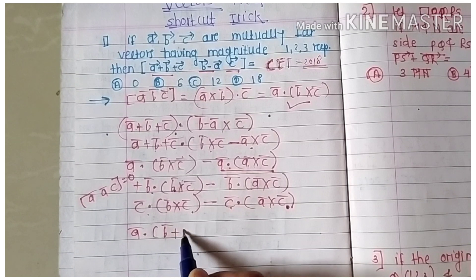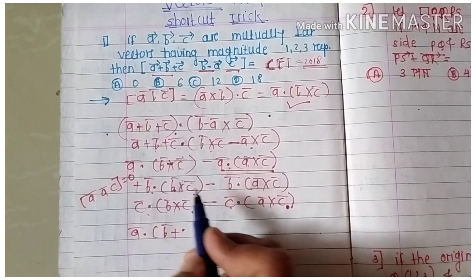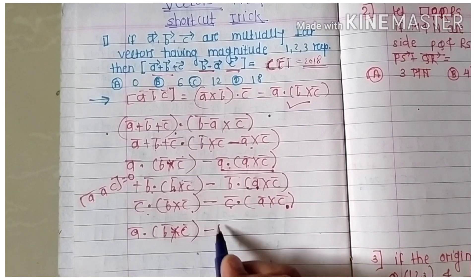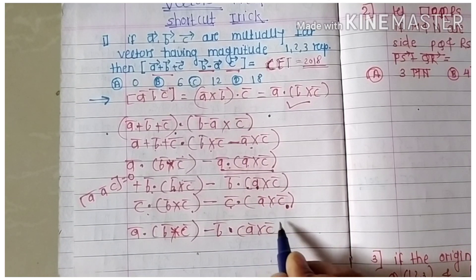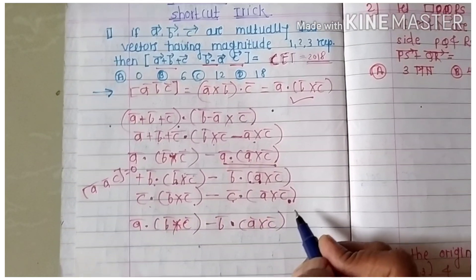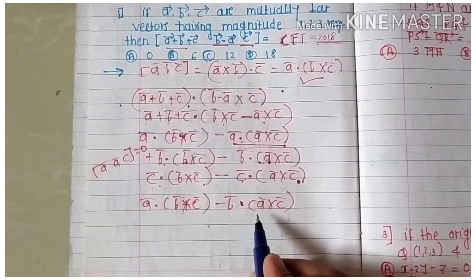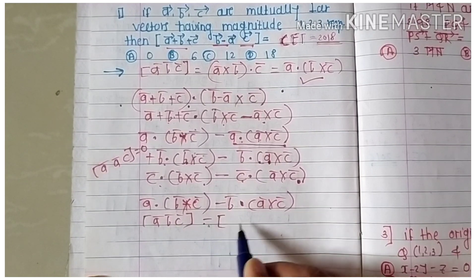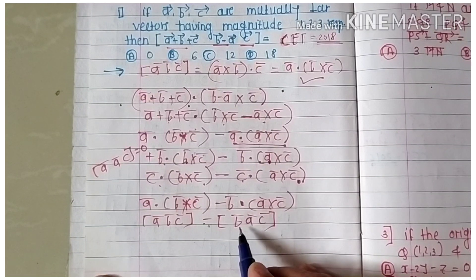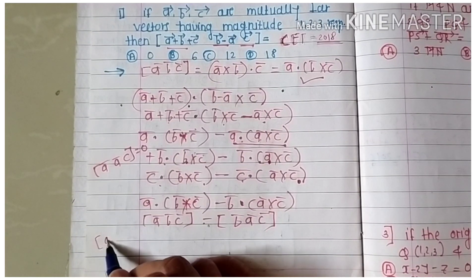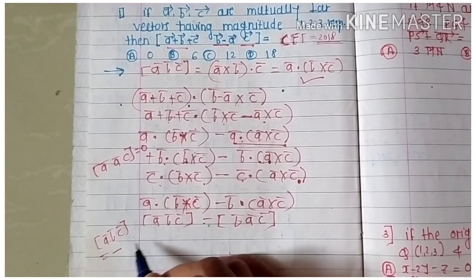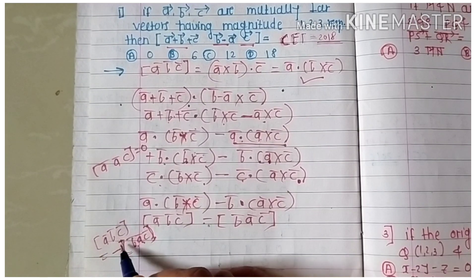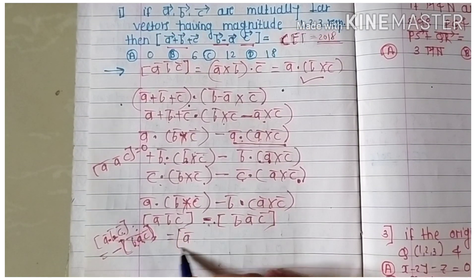The remaining terms are ā·(b̄ × c̄) and minus b̄·(ā × c̄). Using the property of scalar triple product: [ā, b̄, c̄] = −[b̄, ā, c̄], meaning b̄·(ā × c̄) = −[ā, b̄, c̄]. So minus b̄·(ā × c̄) equals plus [ā, b̄, c̄].